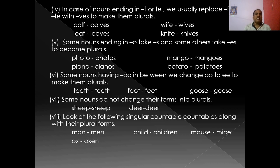In case of nouns ending with F or FE, we usually replace F or FE with VES to make them plural. For example: calf — the word ends with F, so we replace F with VES → calves. Leaf → leaves. Wife — the word ends with FE → wives. Knife → knives.